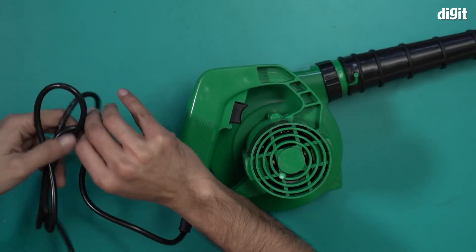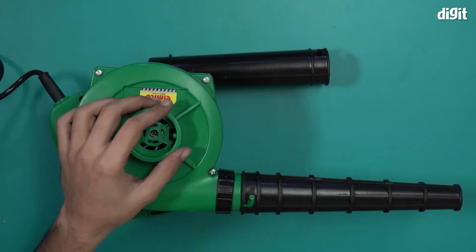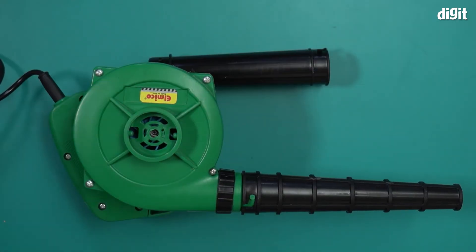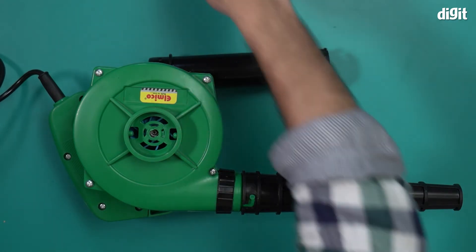This is what you'll find inside the box containing the Elmico electric blower, model number EB4. Thank you for watching.